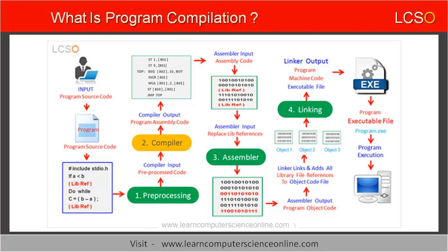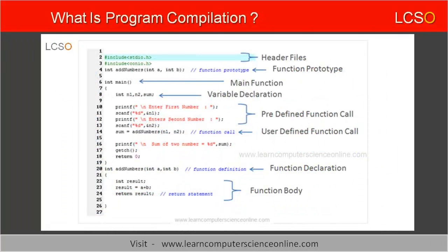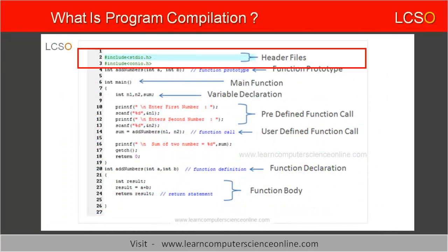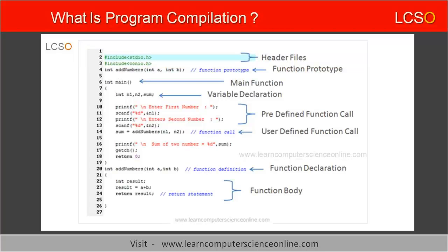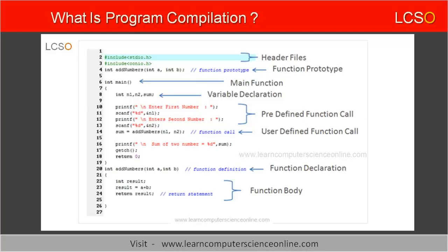The first stage of the compilation process is called the pre-processor stage. The pre-processor stage takes the program source code file as input and provides the pre-processed file as output with a .i extension. The compiler scans the source code file for all pre-processor directives, including all #include and #define codes. The pre-processing stage includes all header files, and all #define macros are resolved by replacing them with their absolute values. All comments are also excluded at the pre-processing stage.